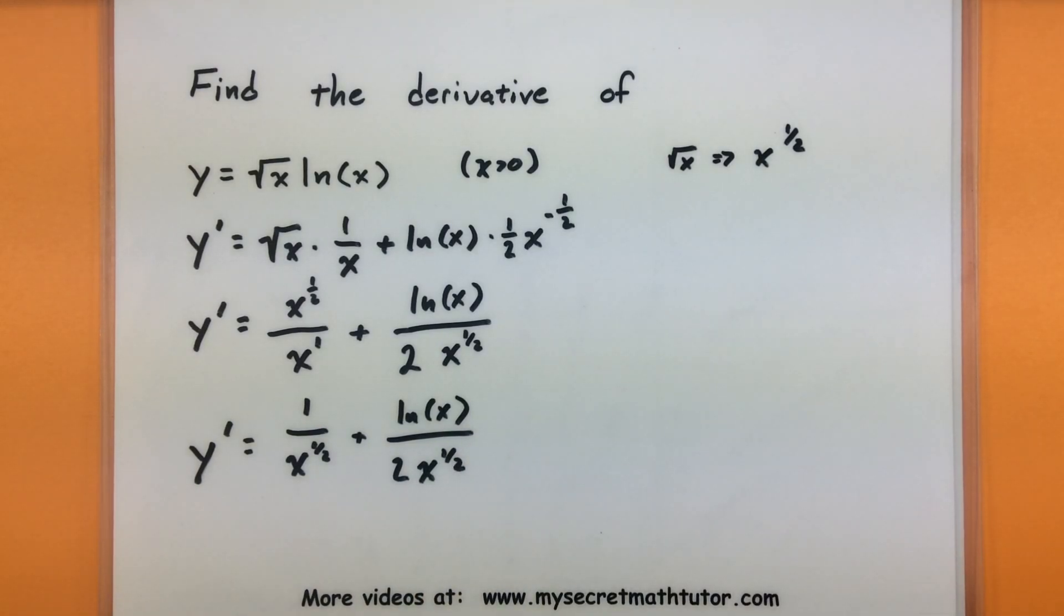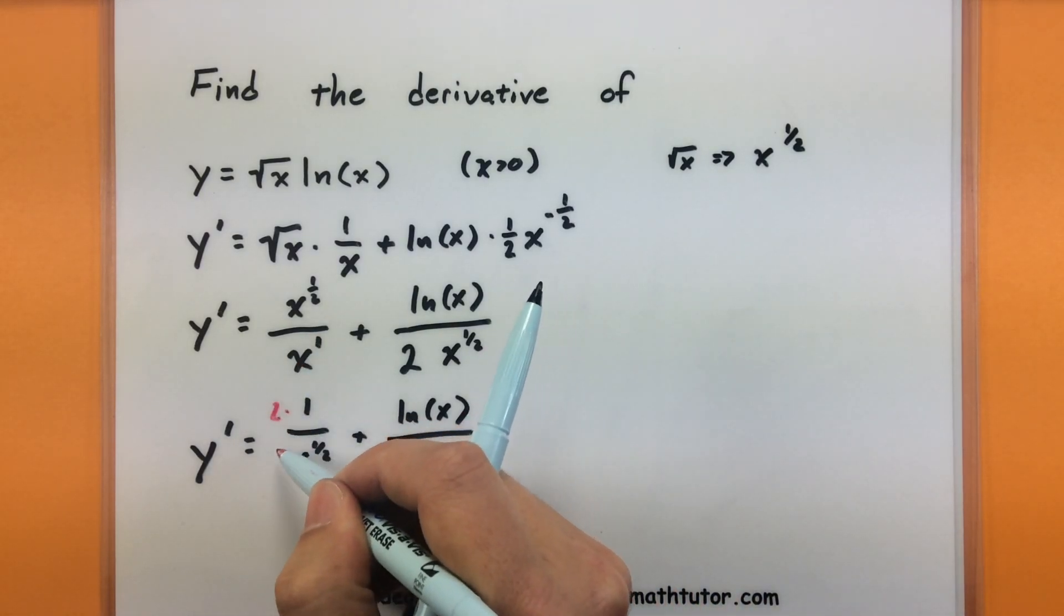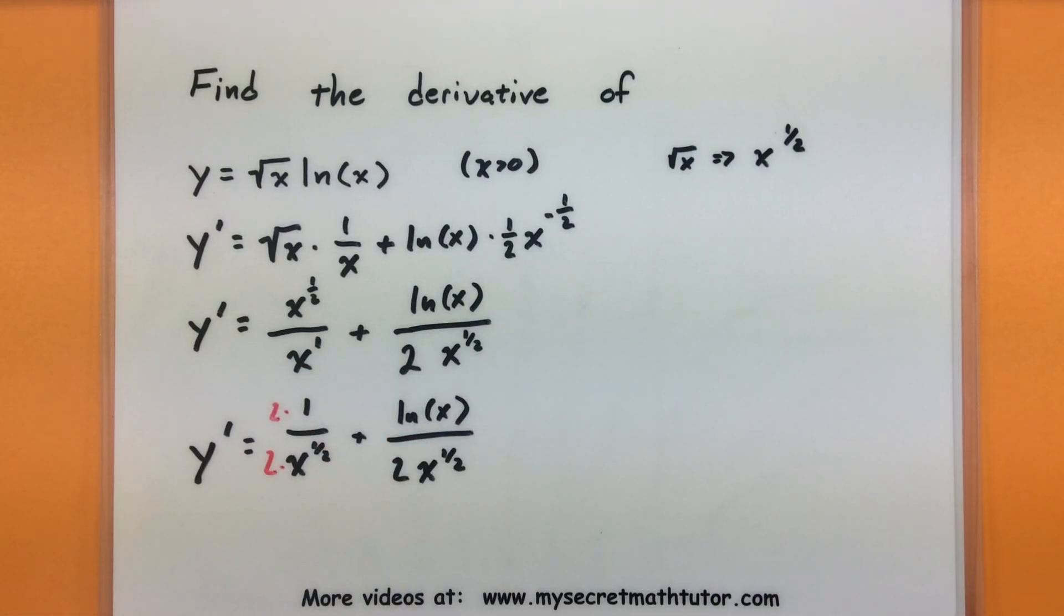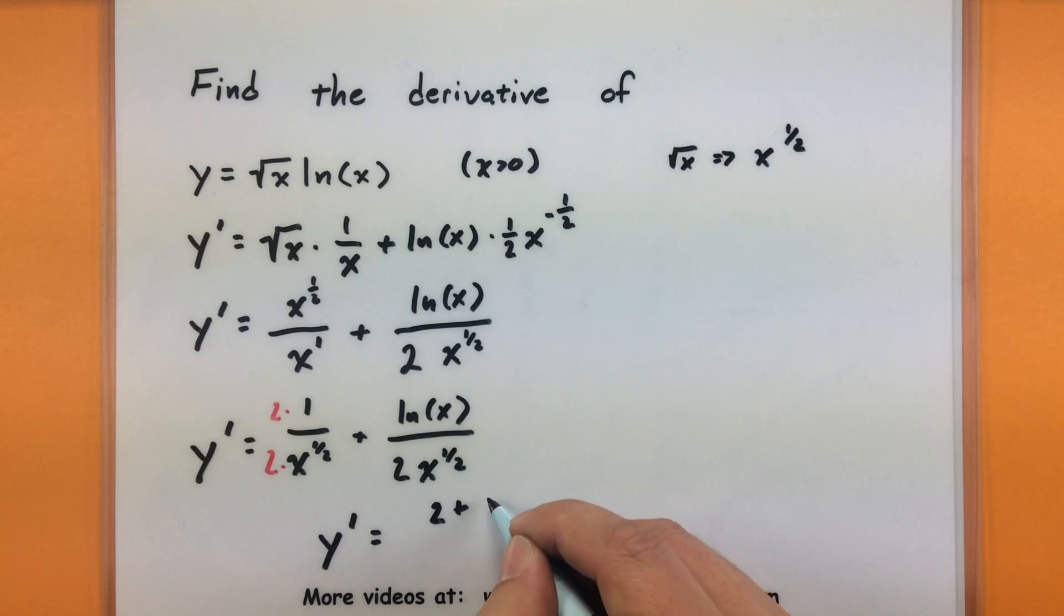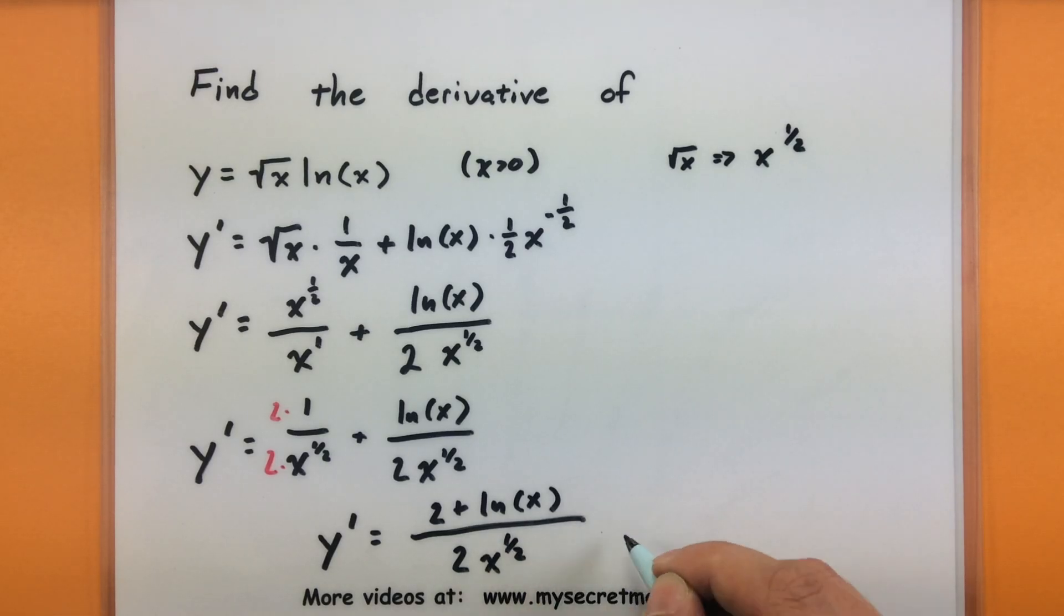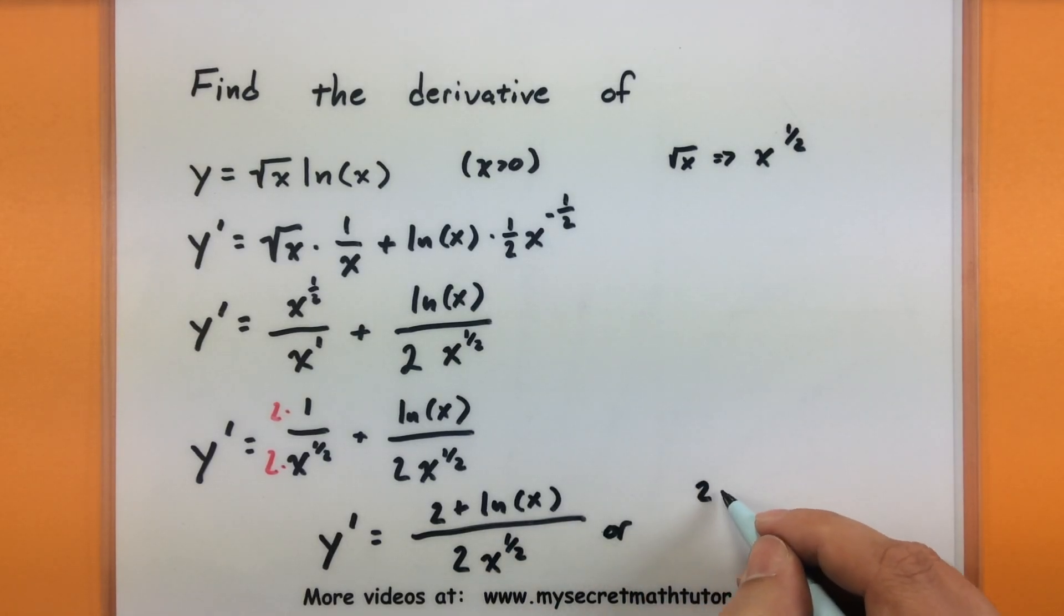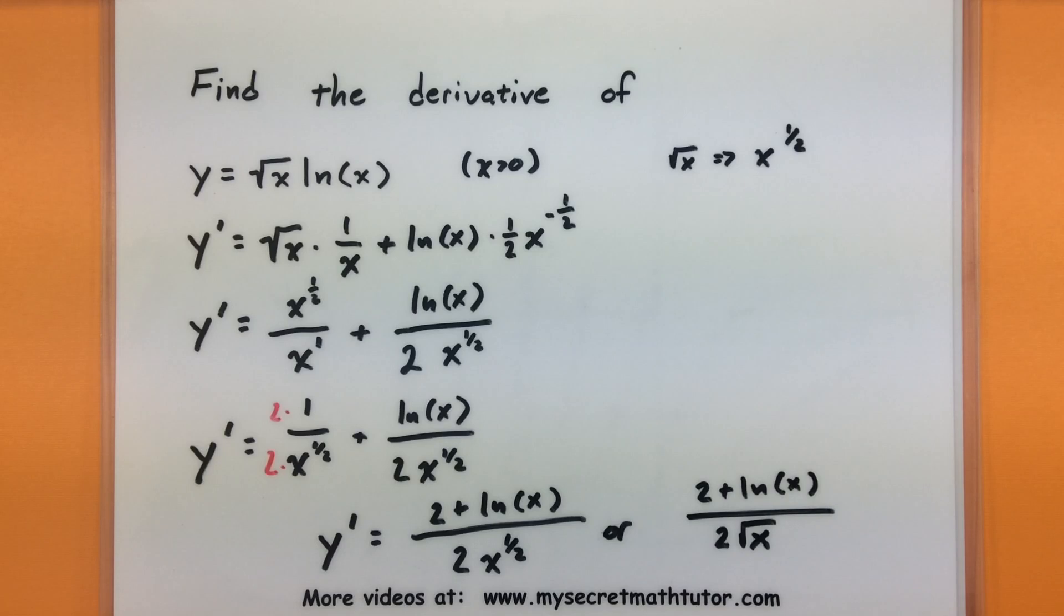And now we almost have the same denominators. If I multiply the first one on the top and bottom by 2, that should do it. And this will give me y prime is equal to 2 plus the natural log of x, all over 2, x to the 1 half power. Or I guess if you really want to throw in a square root, that's okay too. 2 times the square root of x. Nice.